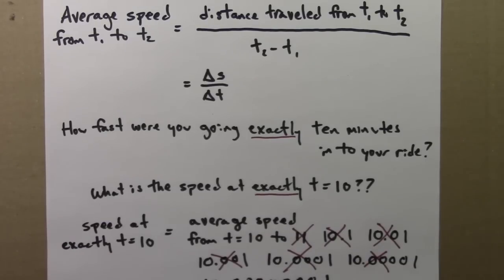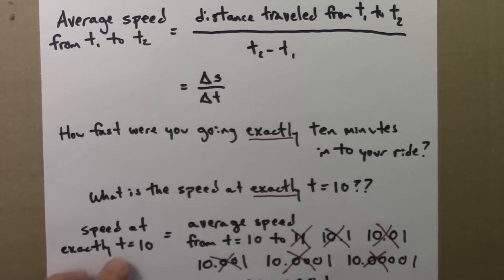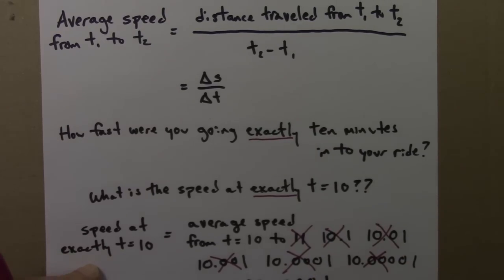And so the way out of this bind, since it seems like we could play this game forever, is to agree that if the right-hand side is getting closer and closer to something, then we say that's the speed exactly at t equals 10.